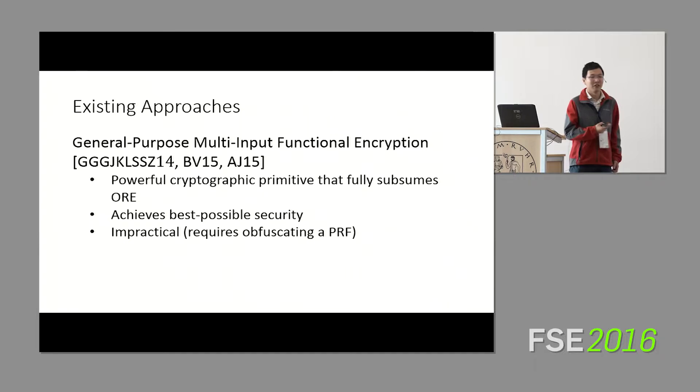Now, there has to be a catch, right? Otherwise, there would not be anything for us to do if we already solved this problem. And the catch is that this is horribly impractical. In fact, this requires indistinguishability obfuscation of a PRF. So if you think indistinguishability obfuscation is not practical, well, now try applying that to a PRF. You get something orders of magnitude even less practical than that. This is a nice theoretical result saying that order-revealing encryption exists if you believe IO exists, but it's not really a solution from a practical perspective. It's not something that we can go out and implement and use.